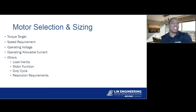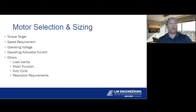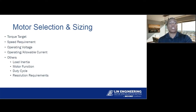Motor selection and sizing. A motor is going to generate torque and motion. To properly select and size a motor, you need to know your target torque and your speed requirement — those are your mechanical outputs. What you're going to give the motor, your electrical inputs, are going to be the operating voltage, be it 12, 24, or 48 volts, and current. It's good to know your max allowable current, because that combination of voltage and current is the power that goes into the motor.